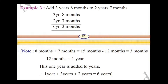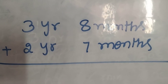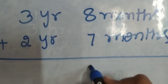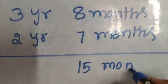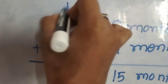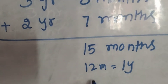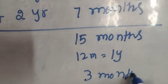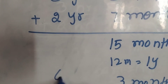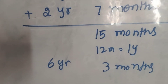Example 3: Add 3 years 8 months to 2 years 7 months. 8 plus 7 is 15 months. As we know, 12 months is equal to 1 year, so we carry 1 and 3 months remain. Then 1 plus 3 is 4, and 4 plus 2 is 6. The answer is 6 years 3 months.